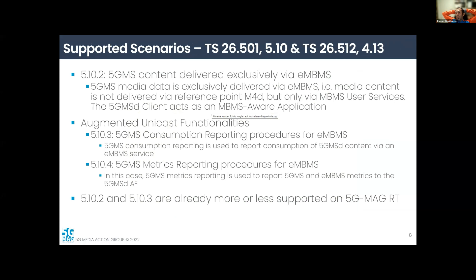An extension to that first scenario is to augment the pure broadcast distribution with uplink functionalities. Basically, if you allow consumption reporting, you have information available in the network about how many devices are consuming the service. You could go further and do metrics reporting — providing metrics on how well the service performs. In this case, you expose metrics from the eMBMS client or consumption reporting metrics and report them using 5GMS-based functionalities. These scenarios — 10.2 and 10.3 — are already more or less supported by the reference tools.